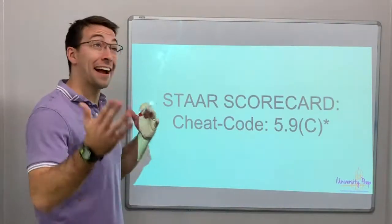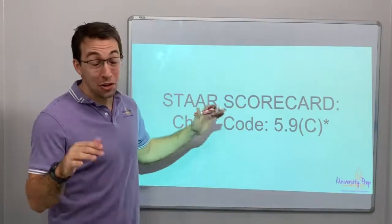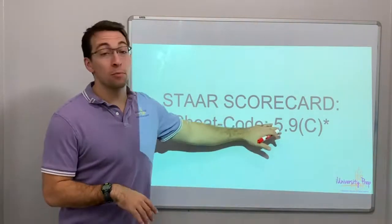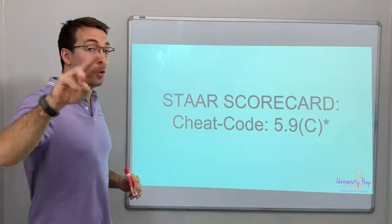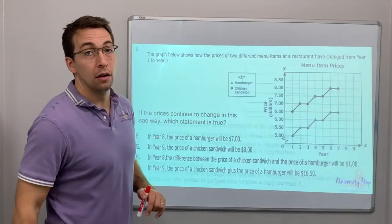Hello everyone! So I got my lighting situation figured out again. Star scorecard cheat code 5.9C. Again, this is the most important TEKS out of the 5.9s. This is video number two. We're gonna do five questions. Alright, so number two.